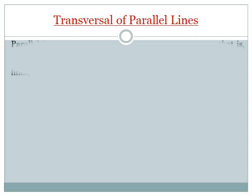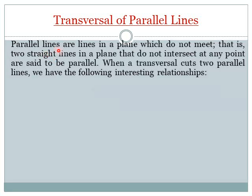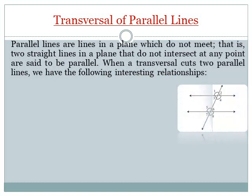Now, transversal of parallel lines. Parallel lines are lines in a plane which do not meet — that is, two straight lines in a plane that do not intersect at any point are said to be parallel. These two lines shown are parallel to each other.